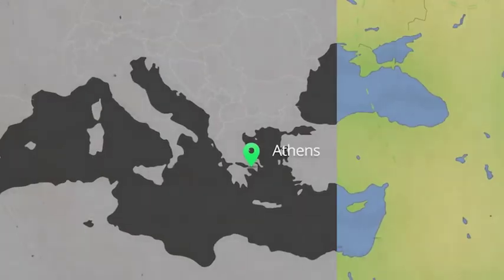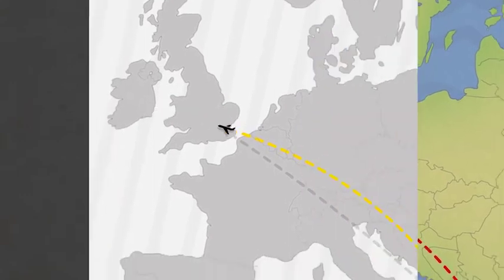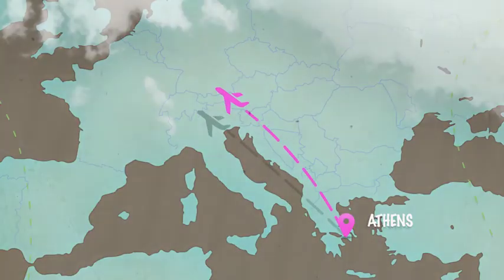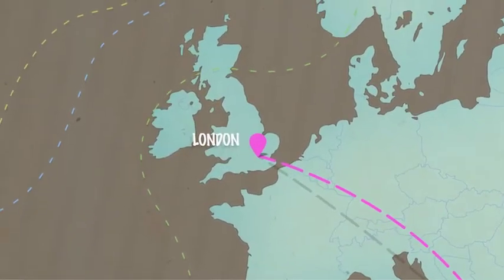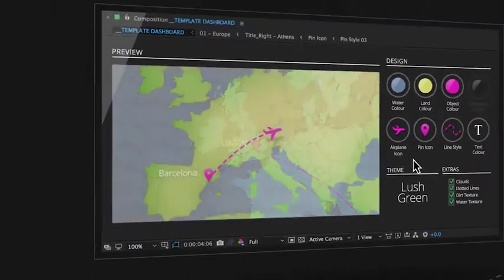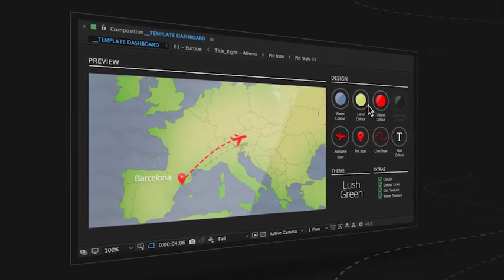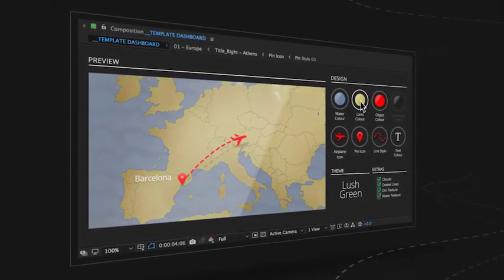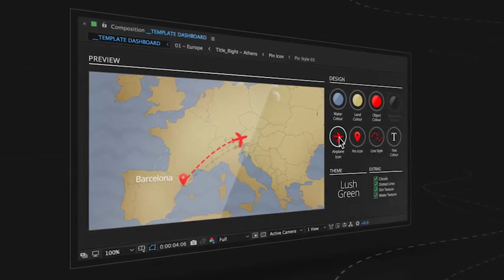Pick from one of our three pre-made visual styles, then tweak every color, line, and icon design to the smallest bit of detail to create a unique look that reflects your personal brand. And all of this is controlled through a custom-designed dashboard, providing you with a seamless experience to change any aspect of your maps.